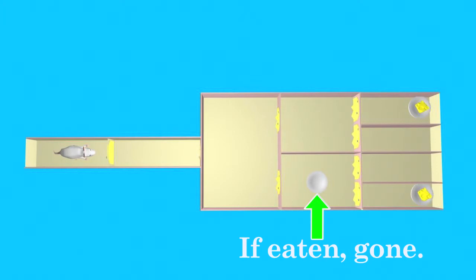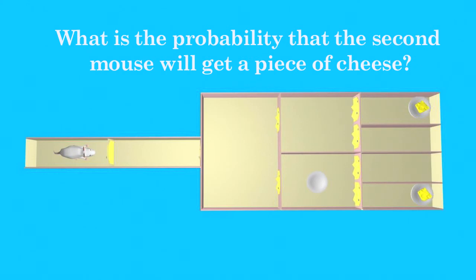The question is, what is the probability the second mouse will get a piece of cheese?